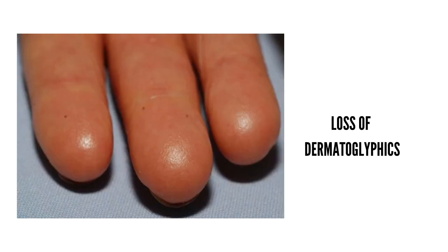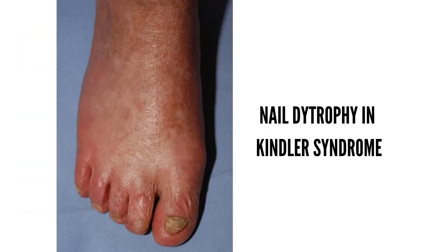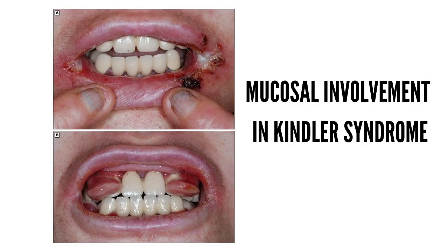Loss of dermatoglyphics mirrors skin atrophy and patients should be aware of this. Scalp hair is not changed, but adults with Kindler syndrome have sparse body hair. Nail dystrophy is common and may accompany sclerosis of fingers and pseudoainhum. Onychomycosis can also be associated. Regarding mucosal lesions, mucosal fragility is very common. The oral mucosa is most frequently affected, with mechanically induced erosions and early severe periodontitis that may lead to premature loss of teeth. Most young adults suffer from progressive dysphagia and esophageal strictures requiring repeated dilations.